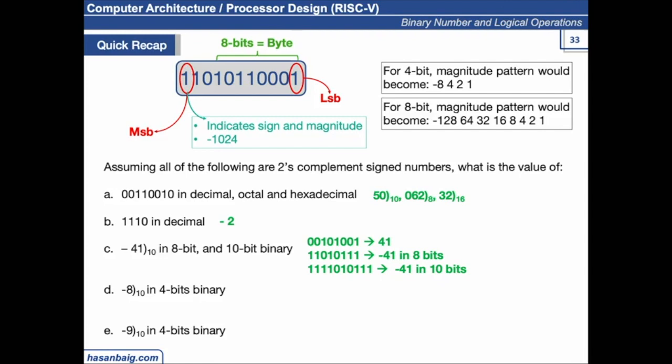For part D, minus 8 in 4-bit binary: the answer is 1000, because the 1 not only represents the sign but also the magnitude. For the last part with 10001: if we write 1001, do we think it's negative 9? If it were negative 9, taking its 2's complement should give positive 9. But taking 2's complement of 1001 gives 0111, which is 7 — not 9.